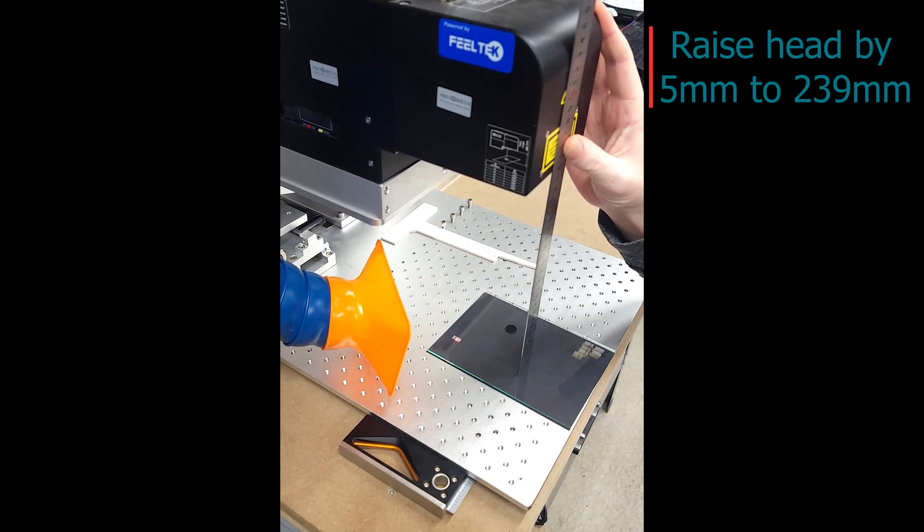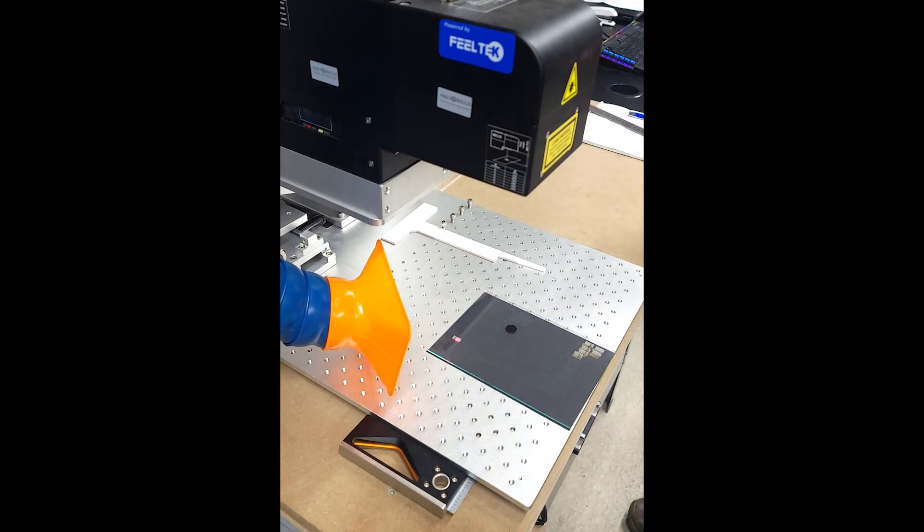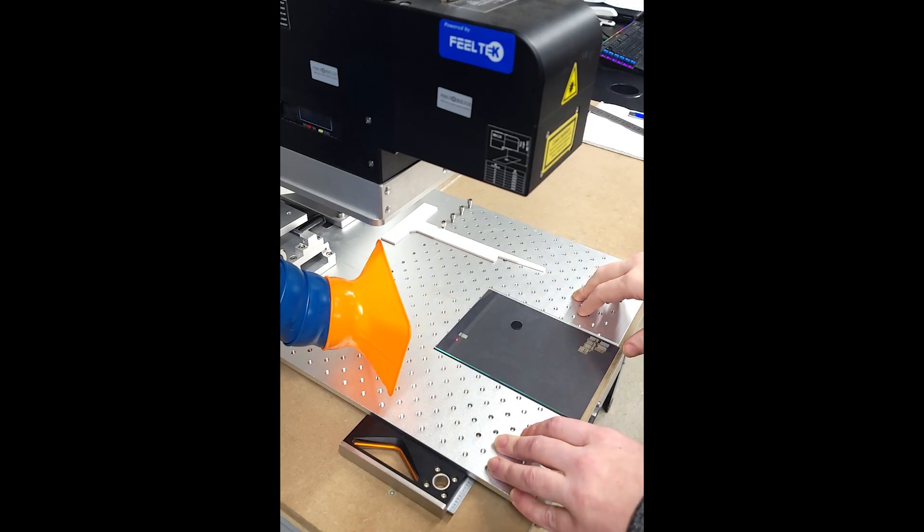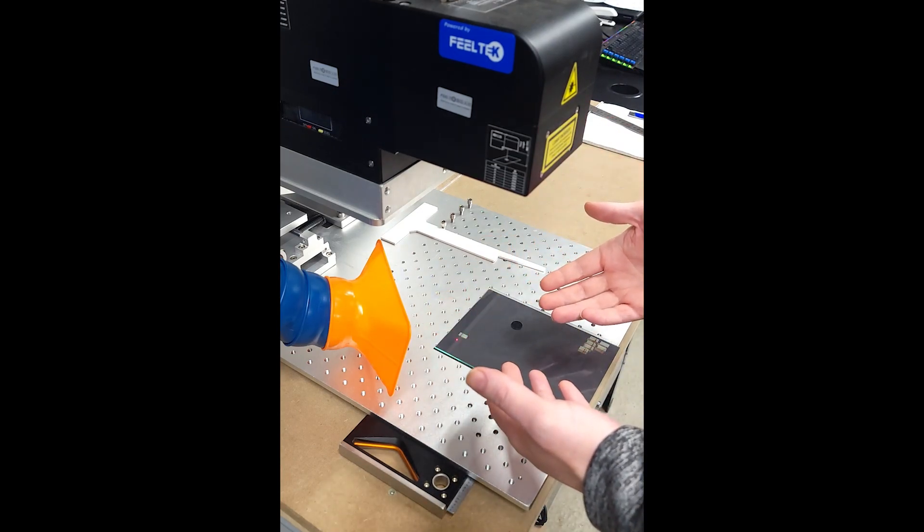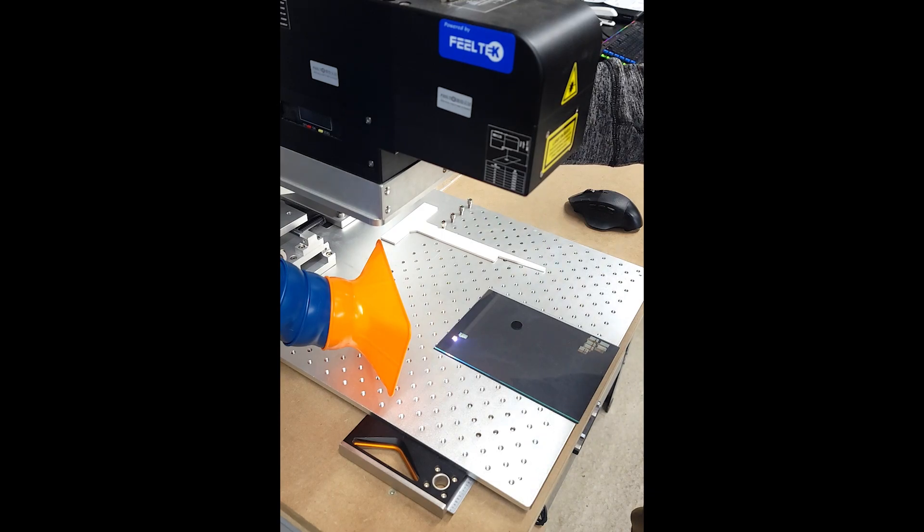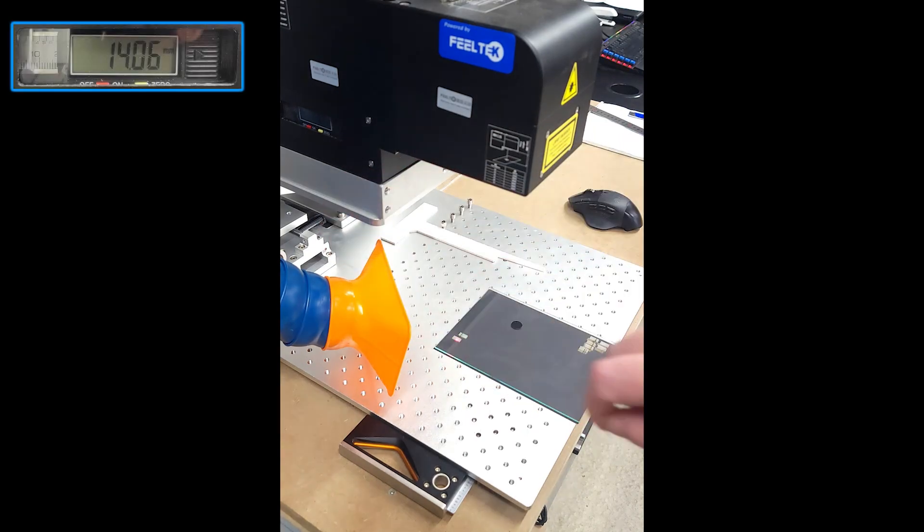Again, I can't stress this enough. Be accurate here, as accurate as you can. We'll go to 239. And now we're going to run the engraving again. And this is where it differs from the FieldTech videos. Instead of raising and lowering our piece of glass, which I find a little tricky, and tricky means inaccurate, instead we are going to adjust the focus knob to find that strong beam again. That looks like it right there.